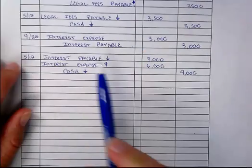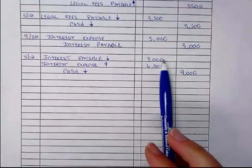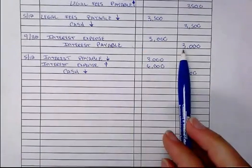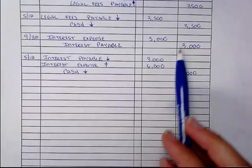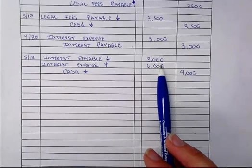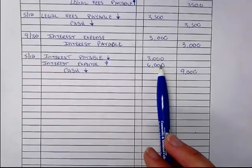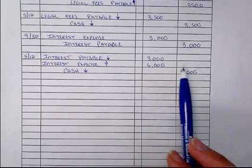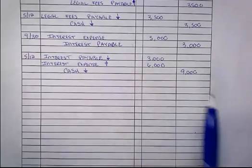On May 20th, we recorded the reverse of the payable because the payment has been made, we're recording the expense for the next 20 days, and we're recording the actual payment of the full $9,000. It's really important that you know which side your debits and credits increase and decrease on, so you have to review chapter 2 to understand these journal entries.